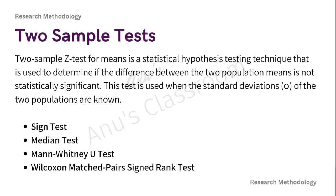The two sample tests we are expected to know include: the sign test, which is based on the sign of a pair of observations; the median test, used to determine whether two independent samples may belong to populations with the same median; the Mann-Whitney U test, used to test whether two samples have been drawn from the same population — this one has been asked repeatedly in exam papers, so focus on it; and the Wilcoxon matched pairs signed rank test, used to test for a difference in the mean or median of paired observations.